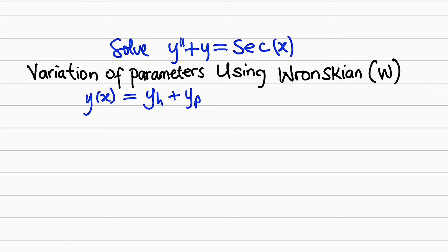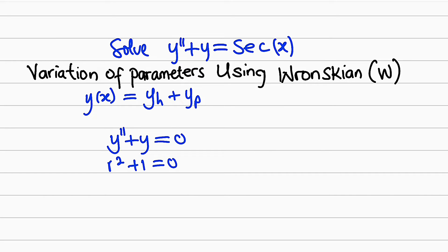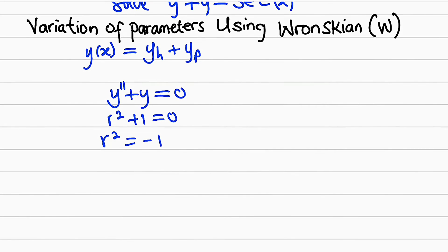y_p is the particular solution, and that is where we are going to apply the idea of the Wronskian. Let's start with the homogeneous differential equation. We take y'' + y = 0, then transform it into the auxiliary equation r² + 1 = 0. Solving for the roots: r² = -1, so r = ±√(-1).